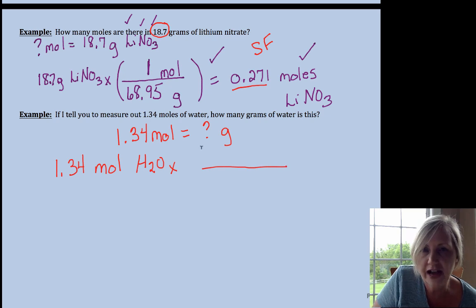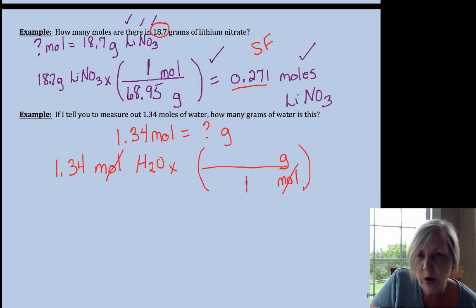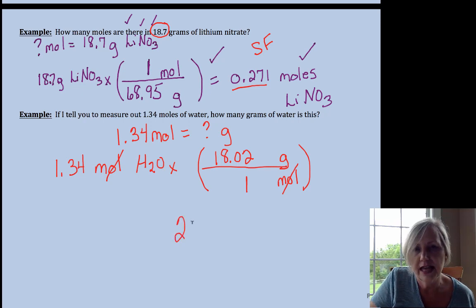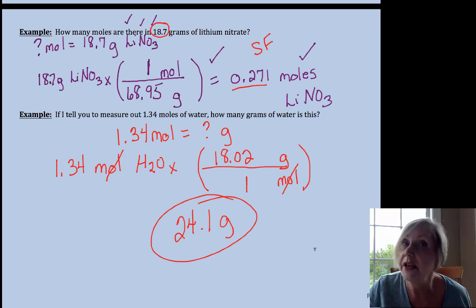Times conversion factor. We have moles, we want to get rid of moles, we want to go to grams. So this is dimensional analysis, getting our units to cancel. The molar mass says for every one mole we have 18.02 grams of water. So that would mean if I needed to deliver that many moles, I would go into the lab and weigh out 24.1 grams.